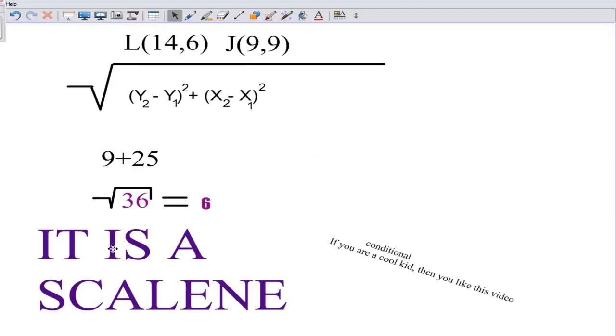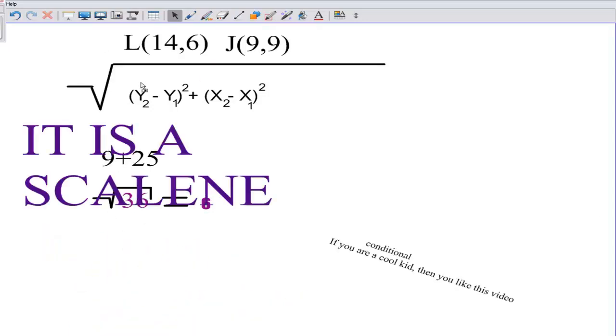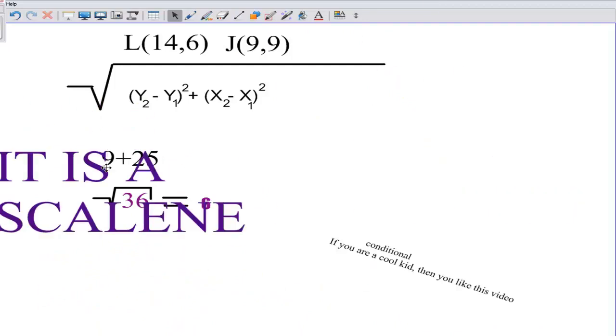So we are going to lastly go to points L and J and we find that the measure is different from both of the other two. So we can tell it is a scalene. And also we have a special conditional for you. If you are a cool kid then you like this video. Thanks guys for watching this video. See you next time.